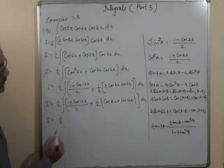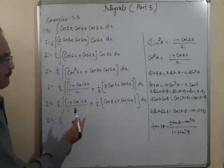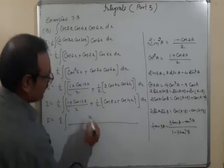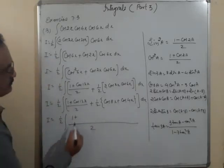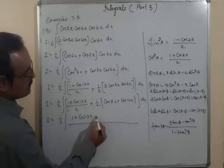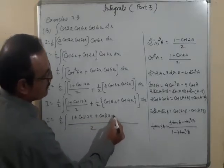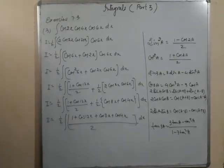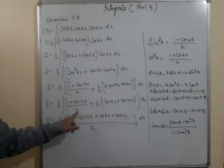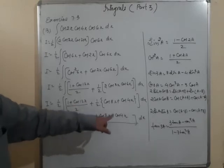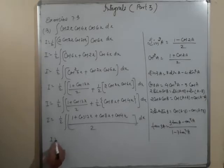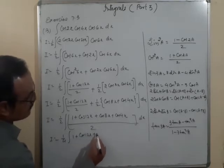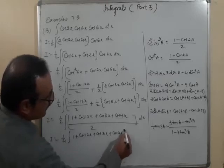Taking LCM of 2, and simplifying: I = (1/4)∫[1 + cos12x + cos8x + cos4x + cos4x] dx. Combining the cos4x terms: I = (1/4)∫[1 + cos12x + cos8x + 2cos4x] dx. All terms are now straightforward to integrate.